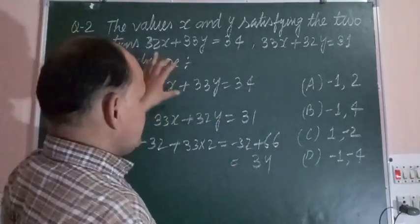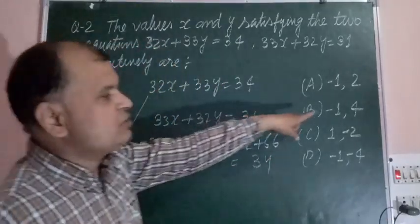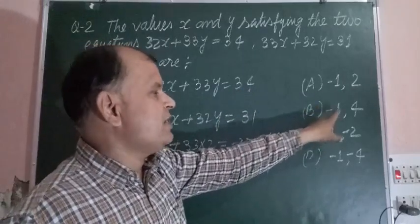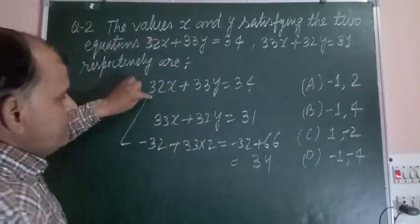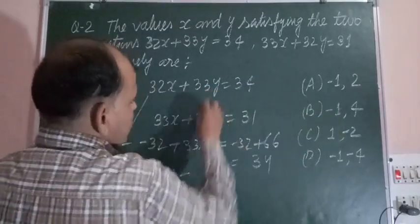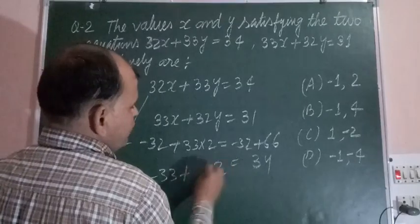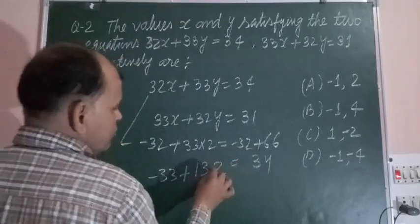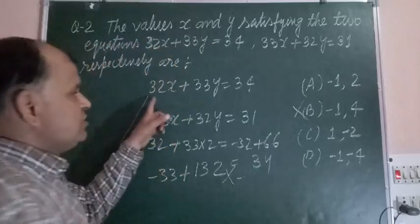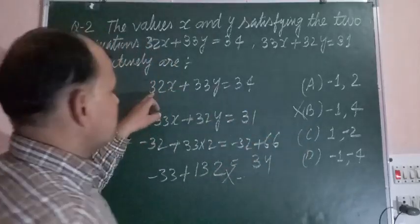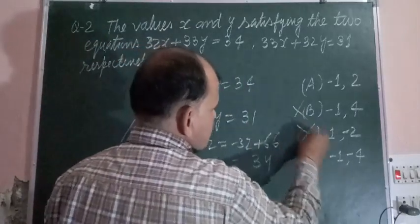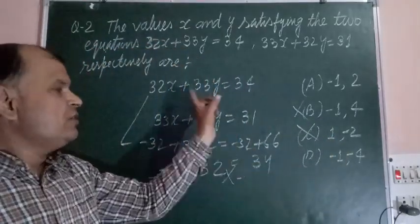So this is satisfying the equation. Now we check this equation with option B, which is minus 1 and 4. When we substitute, we are not getting 34, so this is not suitable. When we check with another option, this becomes 32 and this becomes minus 66. So we got minus 34, which is also not satisfying the given equation.